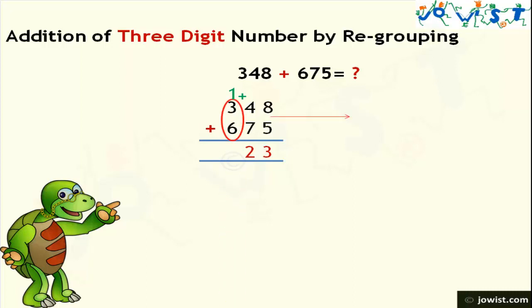At last we will add the digits in the hundreds place. Adding 3 and 6 is 9. One which was carried over is added to it, making the result 10. This 10 will be written as it is in the result, making the final result 1023.